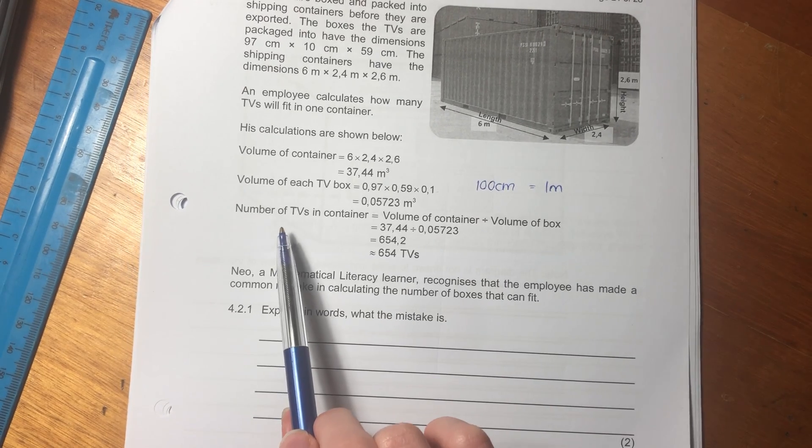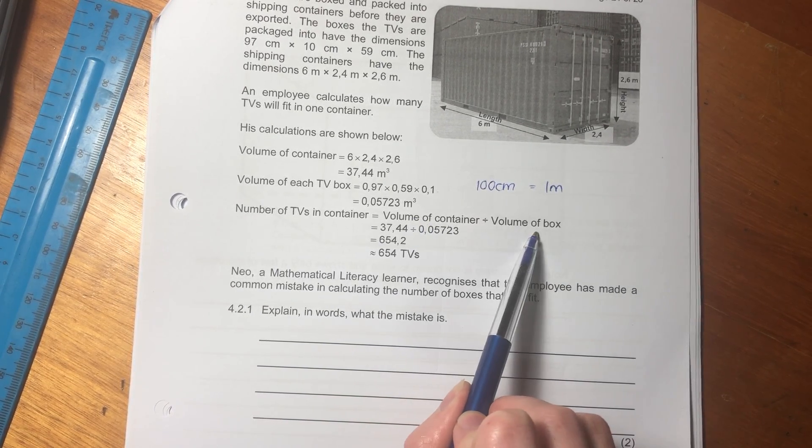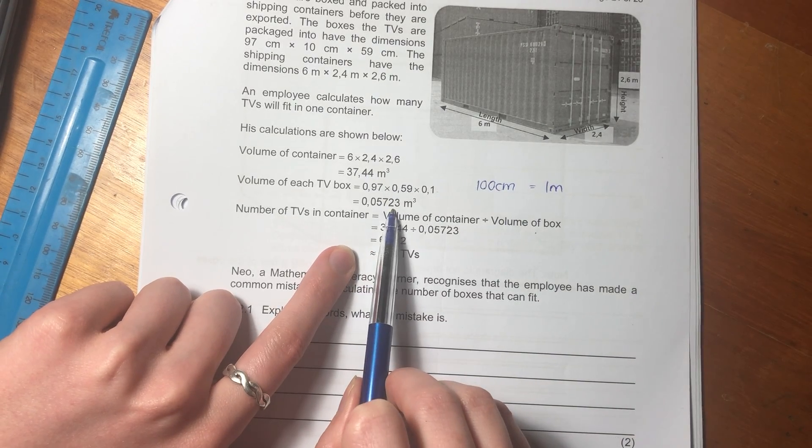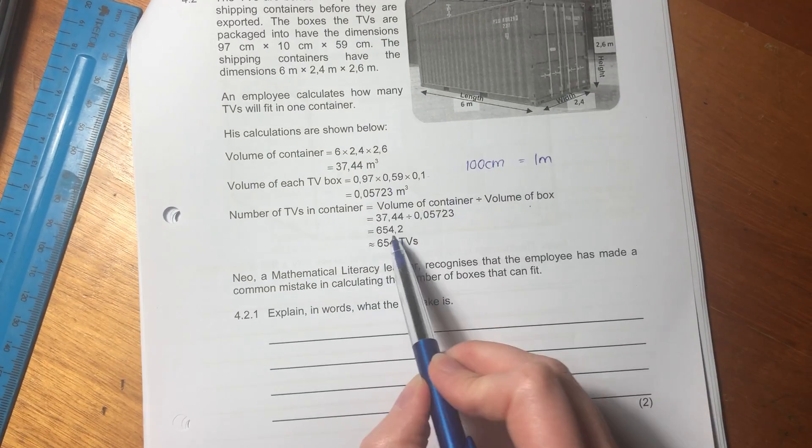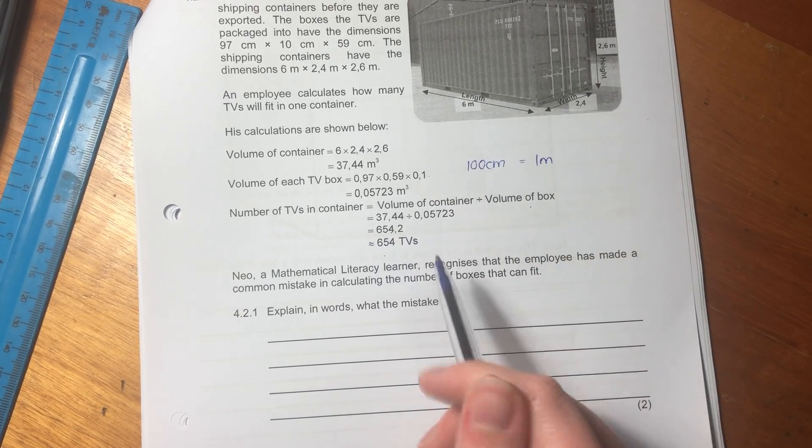Then they've said here, number of TVs in container equals volume of container divided by the volume of box. So they've basically said that answer divided by that answer. And they've got this number here, and they've rounded it down.